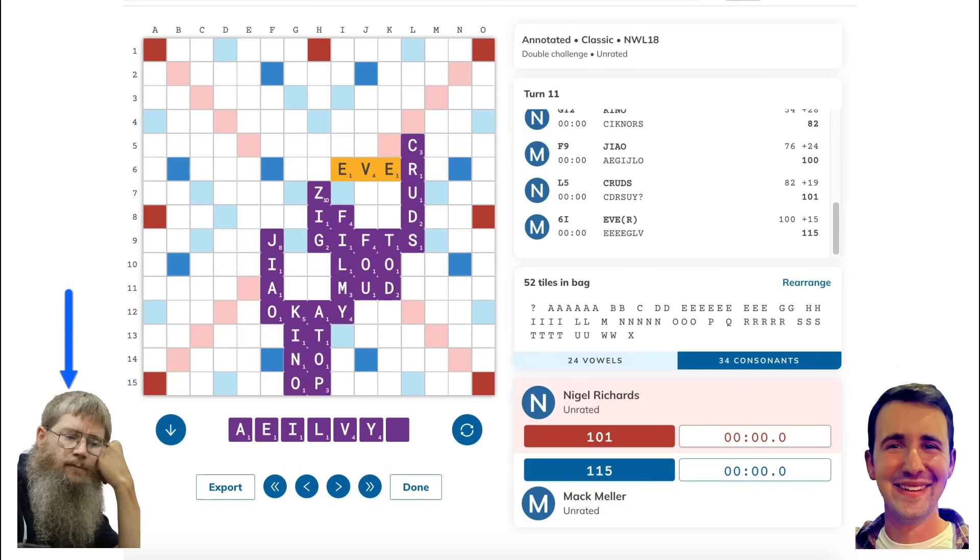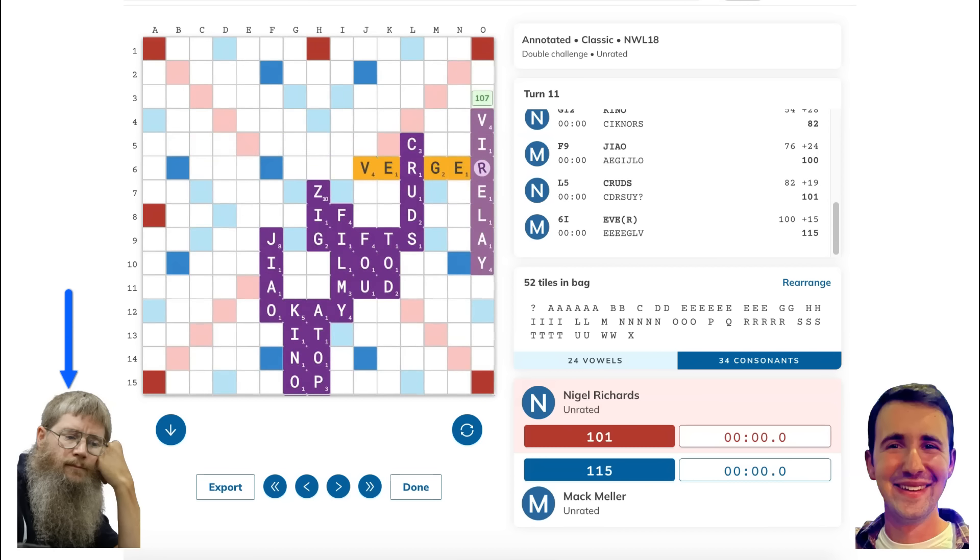After my play of EVER, Nigel played the first bingo of the game with HEAVILY for 79 points, making his blank an H. Now it's worth mentioning that this was not a great scenario for me, but it could have been worse. If I had played VERGE instead of EVER, then Nigel would have played VERLY and VERGER for a whopping 107 points.